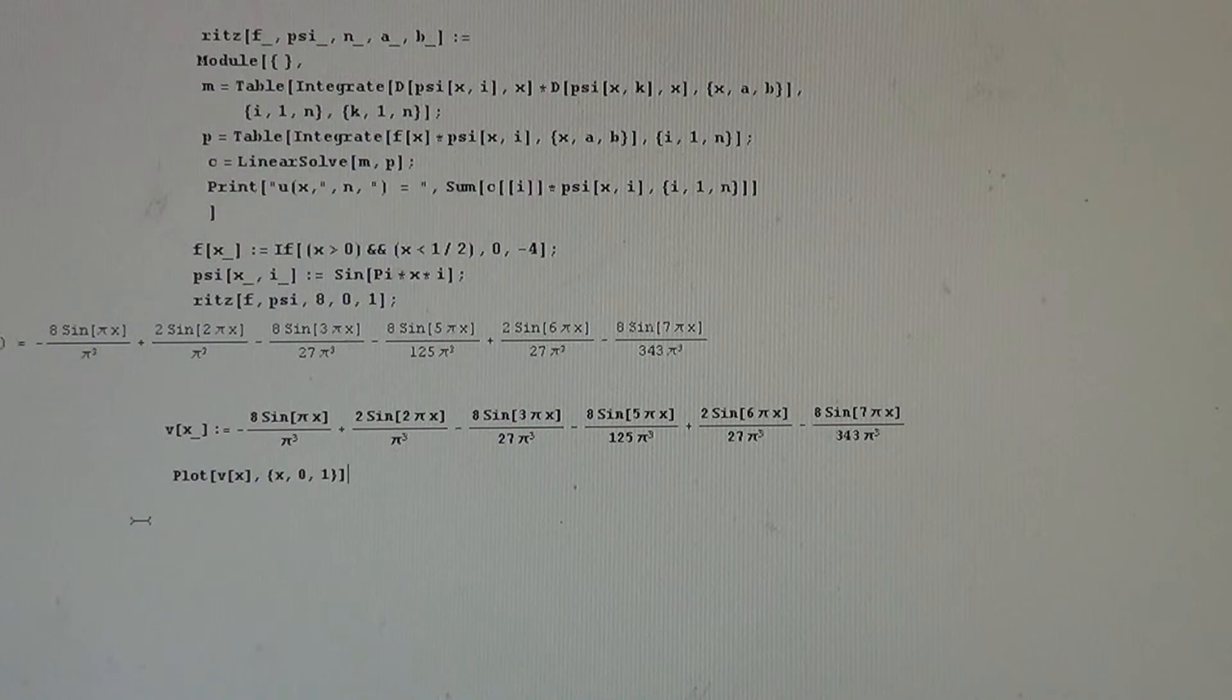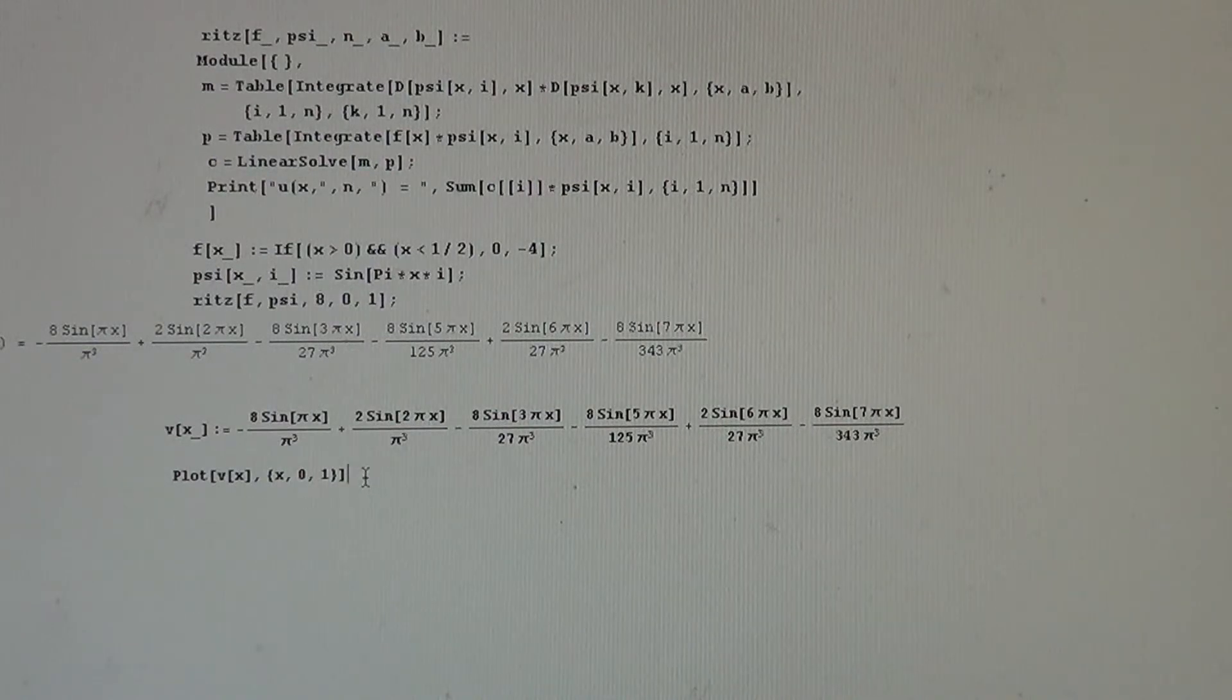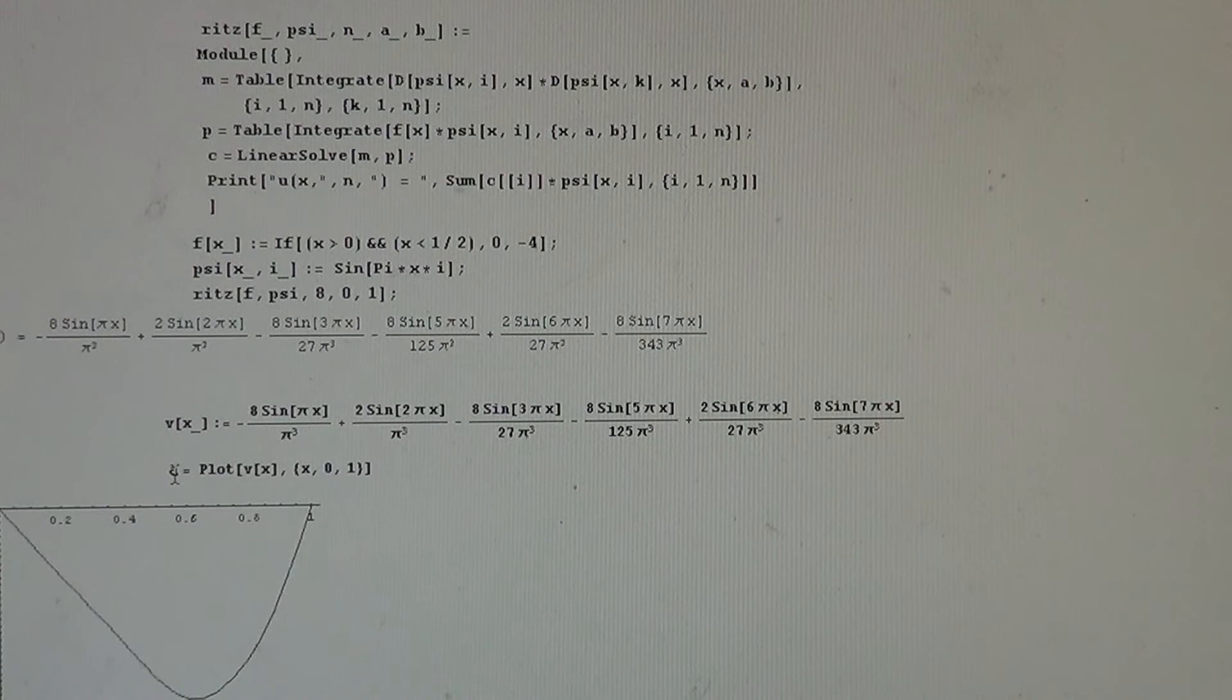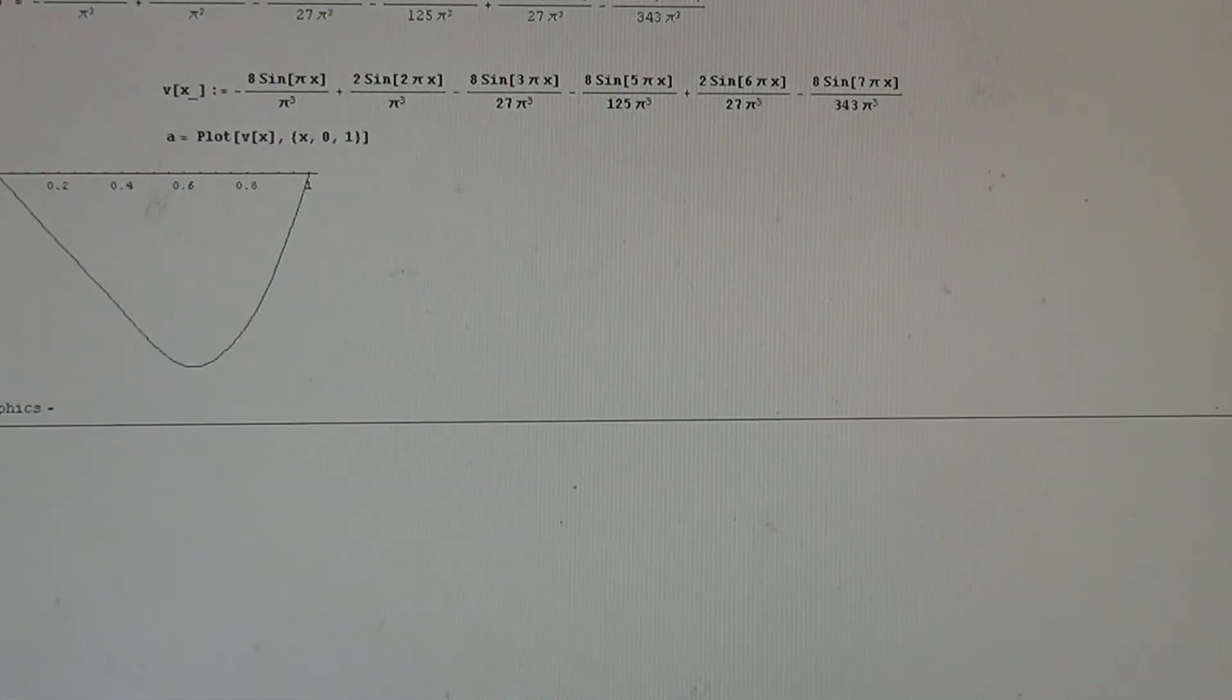plot what to plot V of X, plot with respect to X in the interval 0, 1. We check, we have it, and we put the plot under the name A. This is the plot. We have the solution, we executed, and we have the plot.